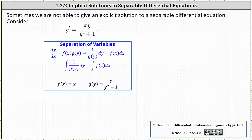Welcome to a lesson on implicit solutions to separable differential equations. Sometimes we are not able to give an explicit solution to a separable differential equation, meaning we're not able to solve the solution for y. Let's solve y prime equals xy divided by the quantity y squared plus one.